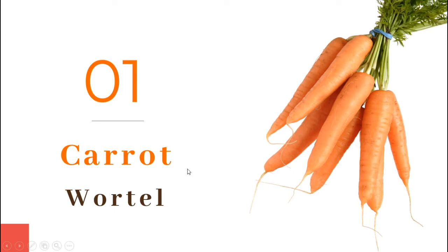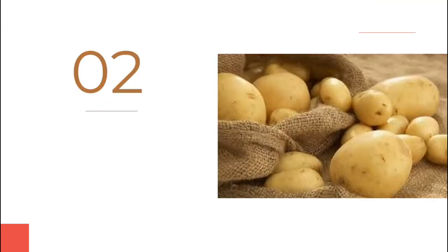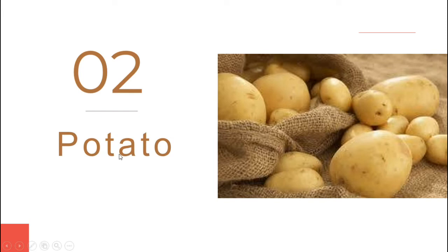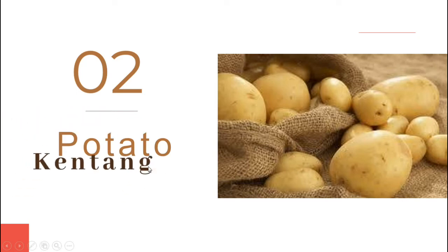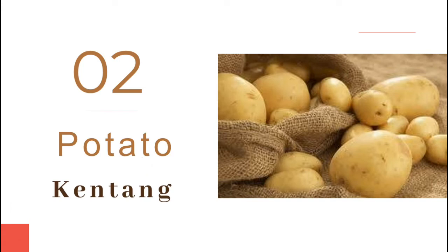Sekarang kita go to number two. For number two, di sini ada sayur yang bentuknya bulat dan warna kulitnya berwarna coklat. Namanya adalah potato. P-O-T-A-T-O. Potato. Potato ini namanya adalah kentang. Jadi, potato adalah kentang.